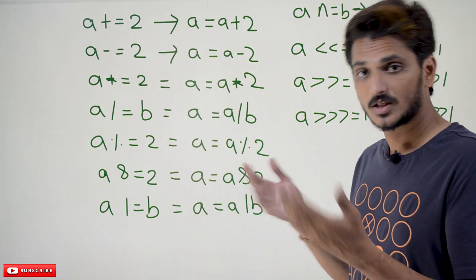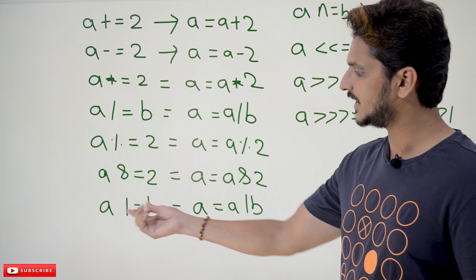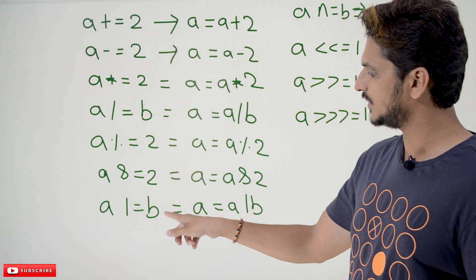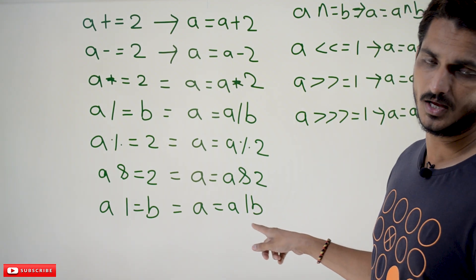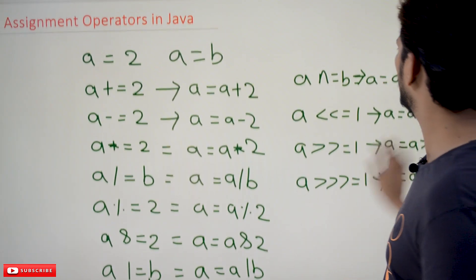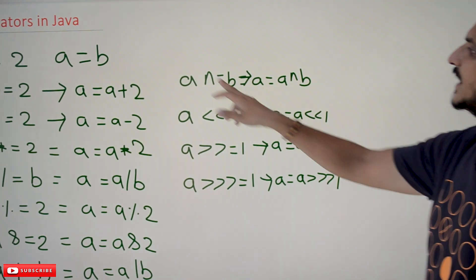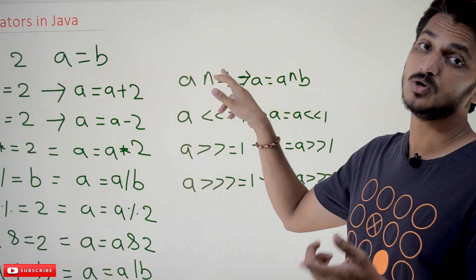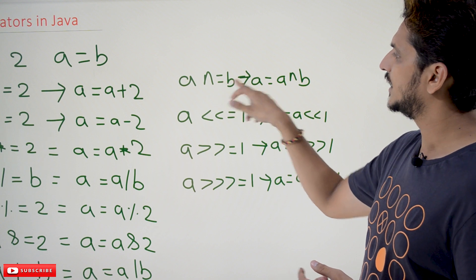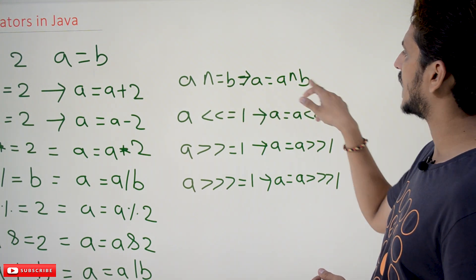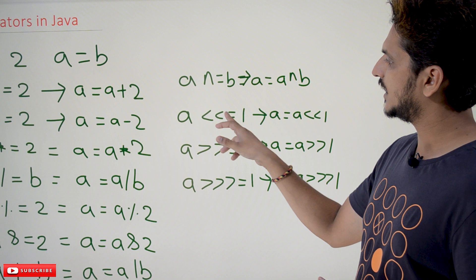So what is bitwise AND we already discussed previously. a OR equal to b means bitwise OR operator, a equal to a OR b. Similarly, you are having this for a cap. Cap symbol means exclusive OR, bitwise exclusive OR. a cap equal to b means a equal to a cap b.